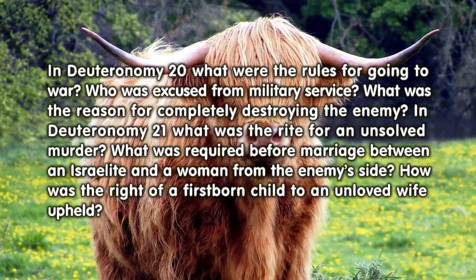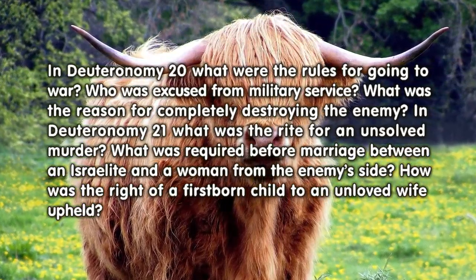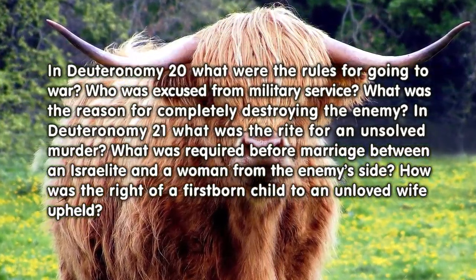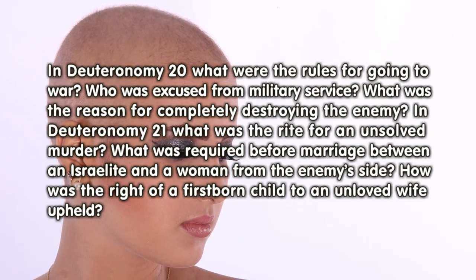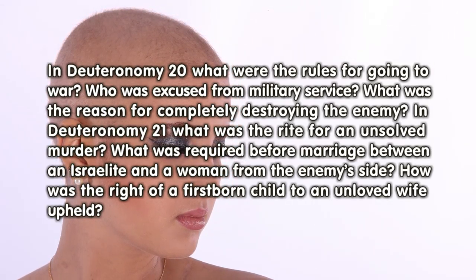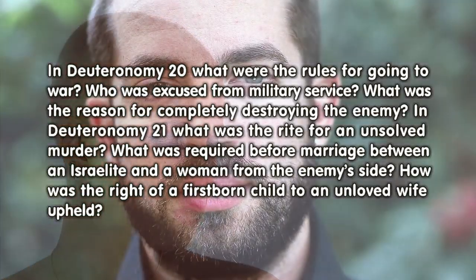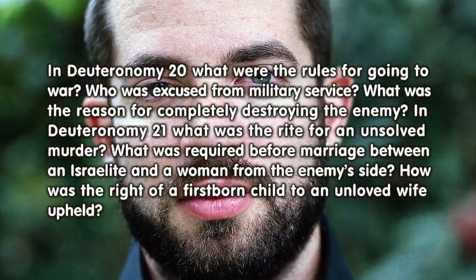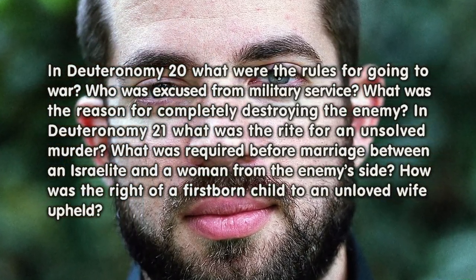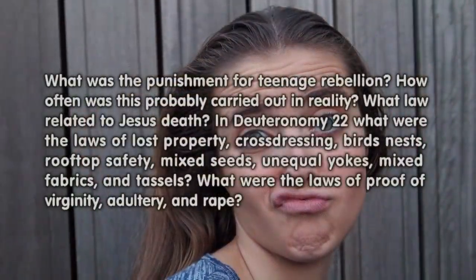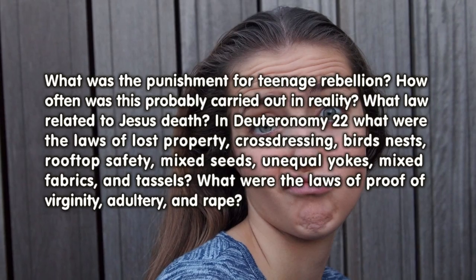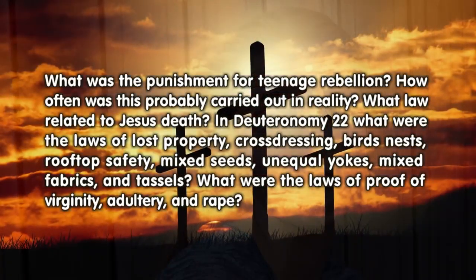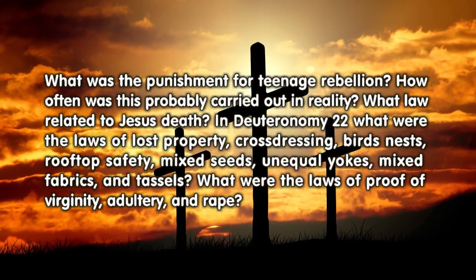In Deuteronomy 21, what was the rite for an unsolved murder? What was required before marriage between an Israelite and a woman from the enemy's side? How was the right of a firstborn child to an unloved wife upheld? What was the punishment for teenage rebellion? How often was this probably carried out in reality? What law related to Jesus' death?